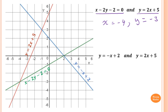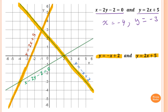Part B: the point of intersection between y = -x + 2 and y = 2x + 5. The first line is here, and y = 2x + 5 is this line here. The point of intersection is here. The x value is negative 1, so x = -1, and y = 3.